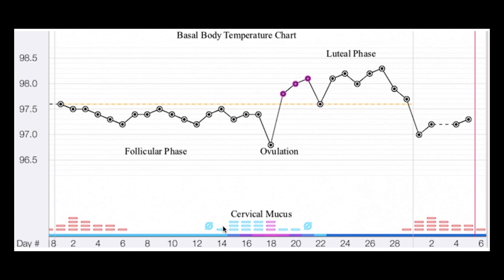Egg white cervical mucus and cervical position tell you that your body is gearing up to ovulate, and then the temperature shift confirms that ovulation has already happened. To confirm ovulation from temperatures, you need at least three consecutive higher temperatures that are at least 0.3 degrees higher than the previous six temperatures. Outside factors like alcohol, a cold, or poor sleep can make temperatures seem elevated even without ovulation, which we'll cover in a separate episode.